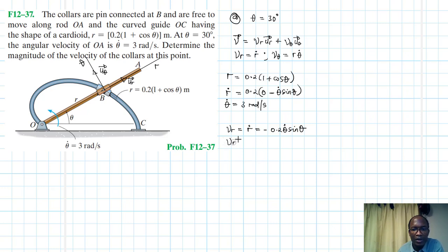At 30 degrees, θ = 30°, this becomes -0.2 × 3 × sin(30). Therefore V_r = -0.3 m/s.